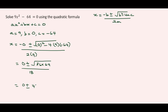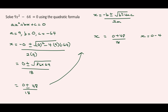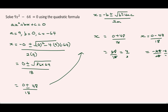So we have X equals 0 plus or minus 48 over 18, and X equals 0 minus 48 over 18. For the positive case: 48 over 18 — dividing by 6 gives 8 over 3. For the negative case: minus 48 over 18 — dividing by 6 gives minus 8 over 3. Therefore X equals negative 8 over 3 and 8 over 3.